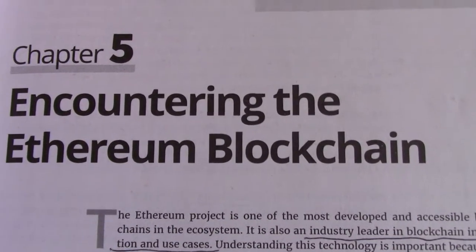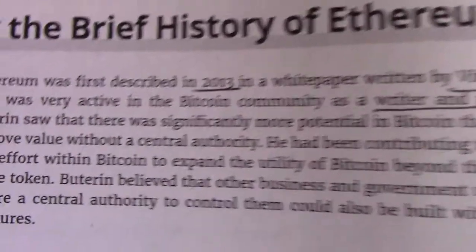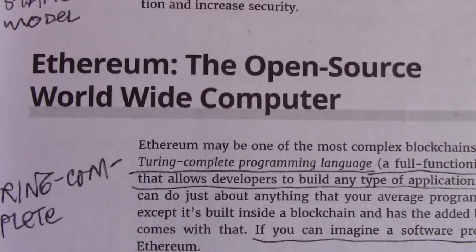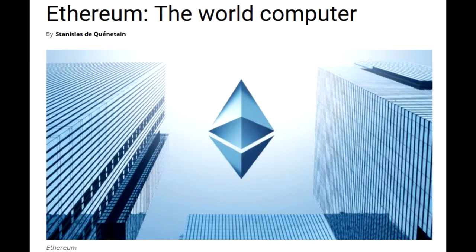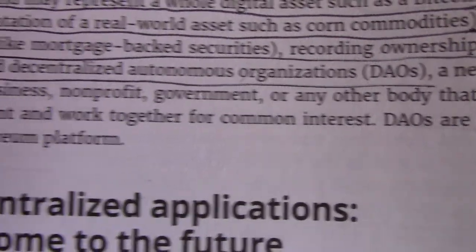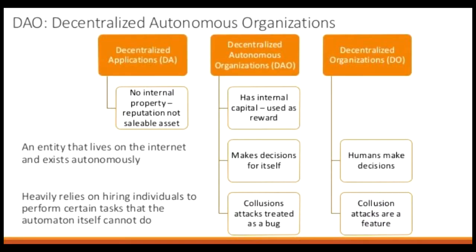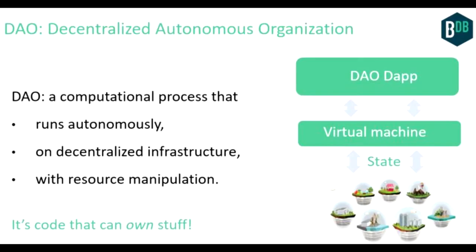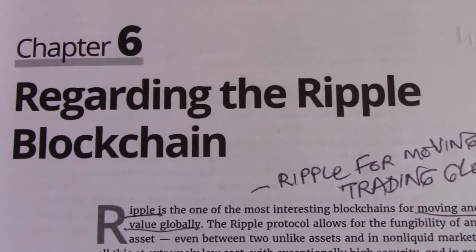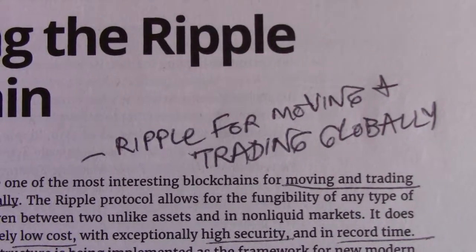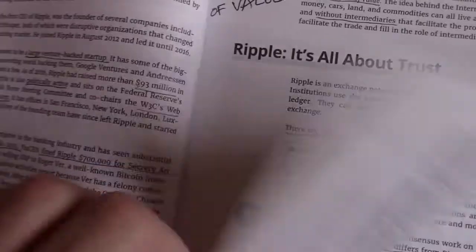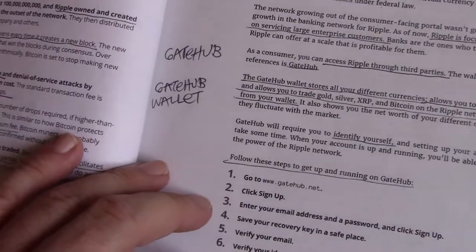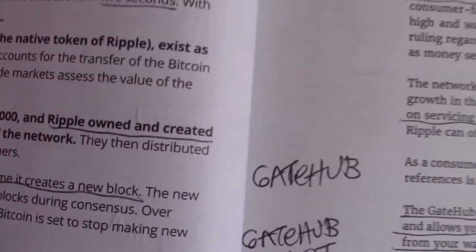Countering the Ethereum blockchain. Exploring the brief history of Ethereum. Ethereum, the open source worldwide computer — you probably want to know what a decentralized autonomous organization is. And we've got the Ripple blockchain — this is for moving and trading globally. Blockchains are used for different things, depending on what your needs are.